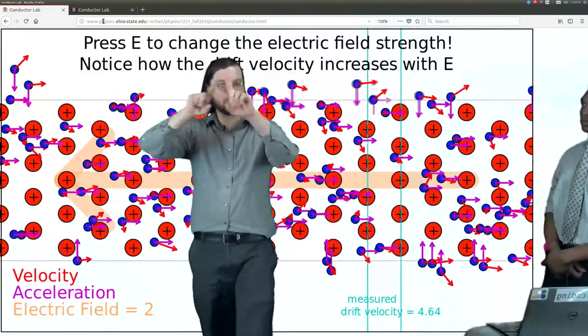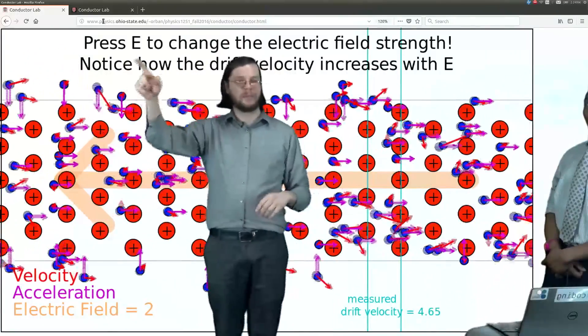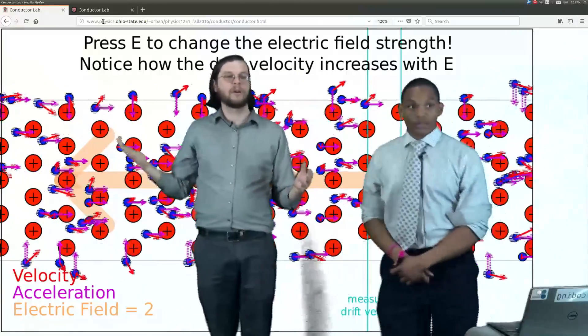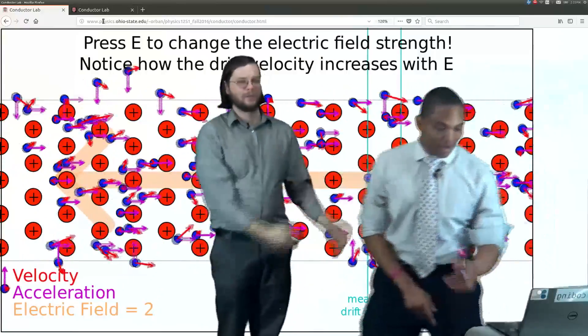So I don't know if you guys noticed this, but at the top this whole time it's been saying, press E to change the electric field strength. Notice how the drift velocity increases with E. Right. What a great idea. So let's do that.